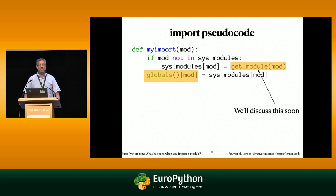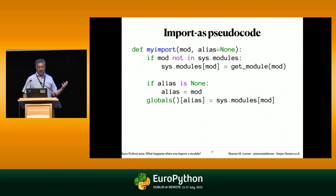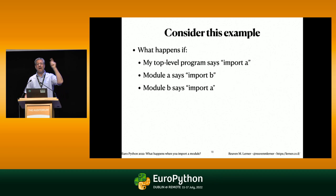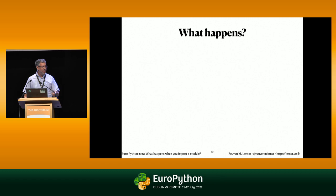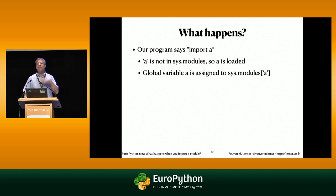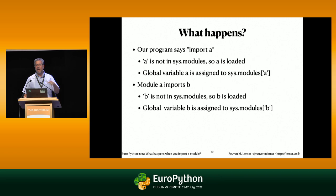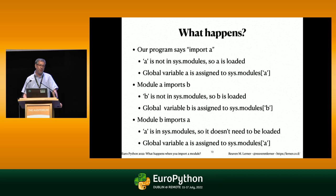For 'import as', we just assign to a different variable name — the same mechanism. For the circular import case: our program says 'import A'. A is not in sys.modules, so it's loaded and global variable A is assigned. Then module A imports B; B is not in sys.modules, so B is loaded and global variable B is assigned. Then B loads A — but A is already in sys.modules, so we skip loading it. But we do still assign A to be sys.modules[A]. You're always going to assign that variable.